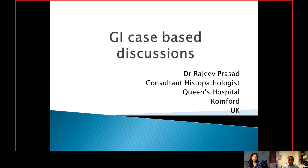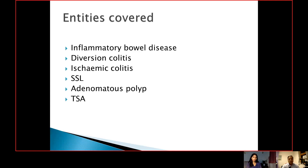Today I will be discussing cases which are commonly seen in the department. The entities I'll be covering are inflammatory bowel disease, which most commonly comprises ulcerative colitis and Crohn's disease, then diversion colitis, ischemic colitis, and then I'll be touching on a few polyps, including sessile serrated lesion, adenomatous polyp, and traditional serrated adenoma.